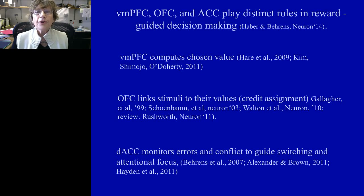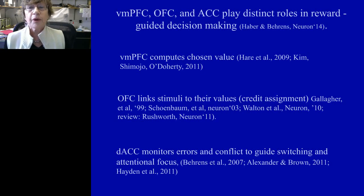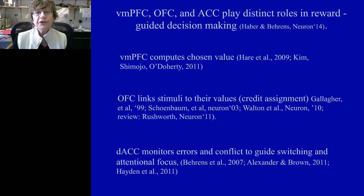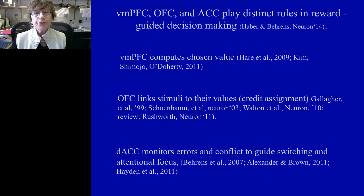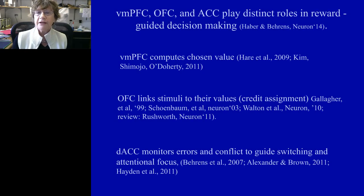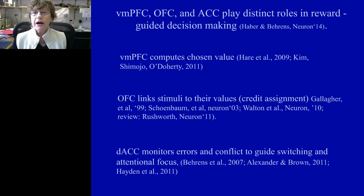Now, these three areas, although clearly linked to each other as well as in general decision-making, seem to have somewhat different functional domains. The ventral medial prefrontal cortex is important in computing a chosen value — do I like raisins better than apples, for example? The OFC is important for linking stimuli to their values, critical in learning and pairing different actions with a value. And the dorsal anterior cingulate is important in monitoring errors and conflict to switch behaviors.